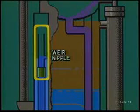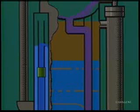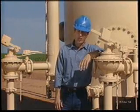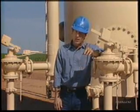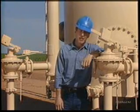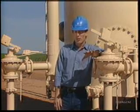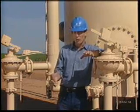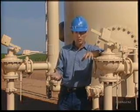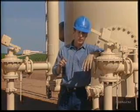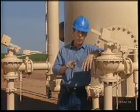Some treaters use an adjustable siphon or weir nipple to change the water level. On these, a one-inch adjustment of the nipple will move the interface height about four or five inches. Heater treaters designed for cold climates often have the siphon line built inside. On these, the siphon box is either outside for accessibility to the siphon nipple, or the nipple is adjusted from the top of the treater through a control mechanism.